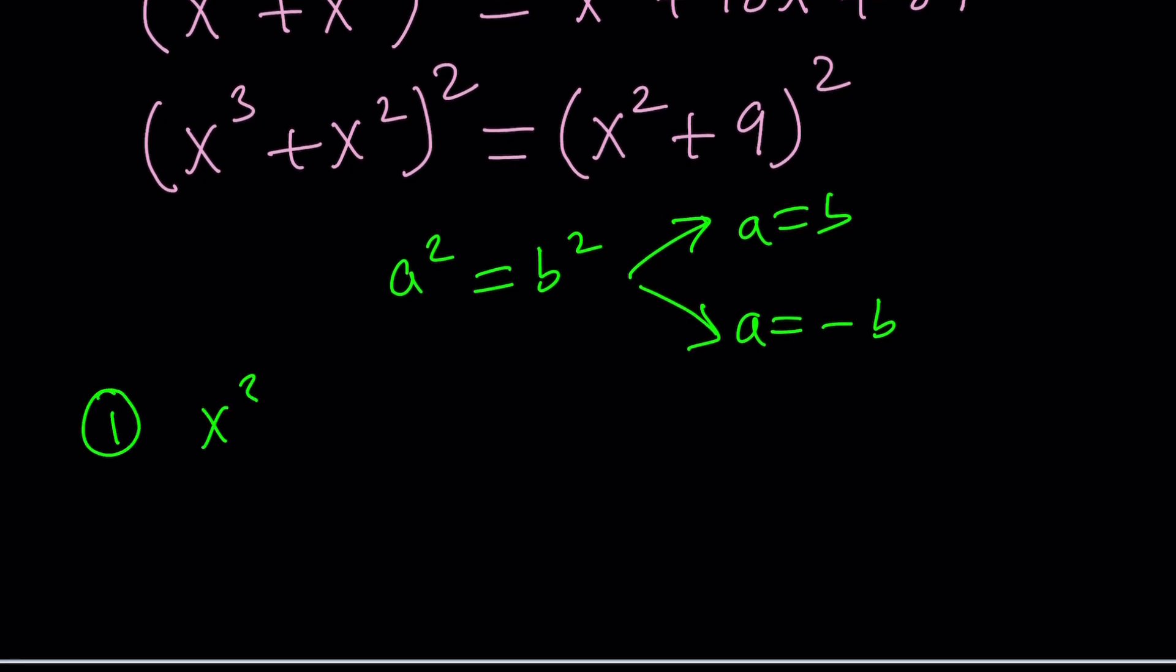x cubed plus x squared equals x squared plus nine. And you know what? This gets even better. x squared cancels out. We got x cubed equals nine. Are you sure about that? Yes. That's the case, right?